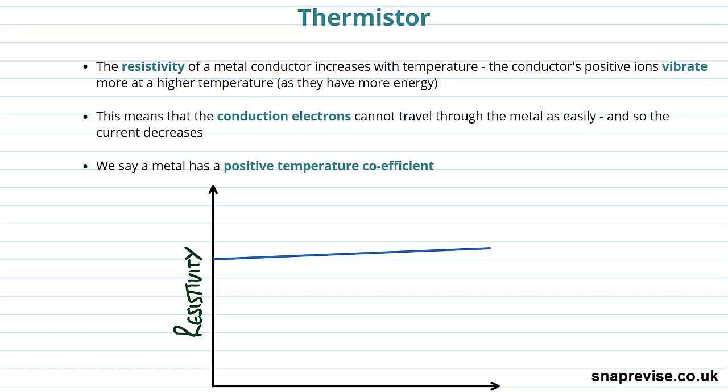In this video we're going to look at the thermistor. Before we do that we need to discuss what we would normally expect to happen for resistivity when we talk about things like metal, metal components in our circuits. What we see is that the resistivity of a metal conductor increases with temperature.